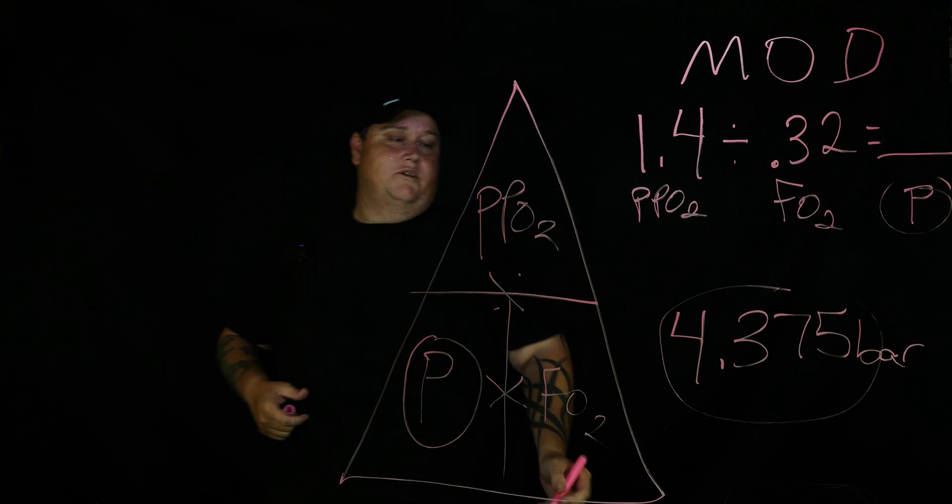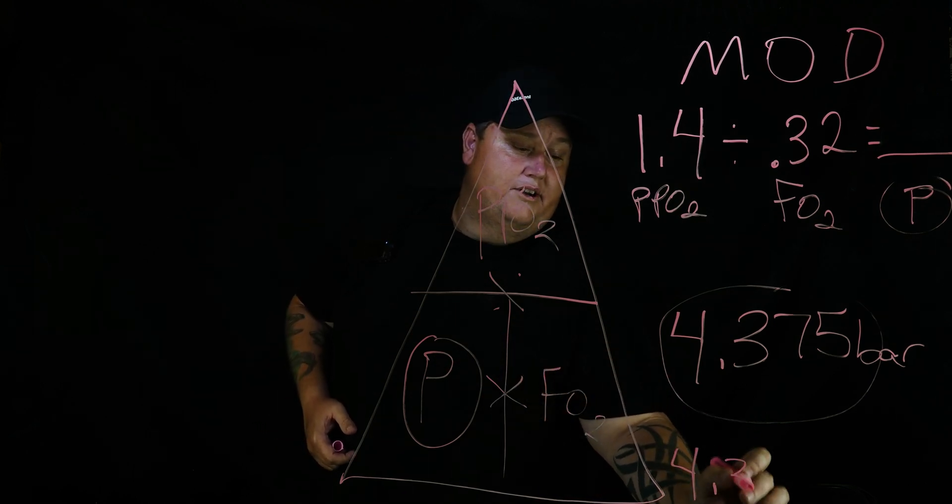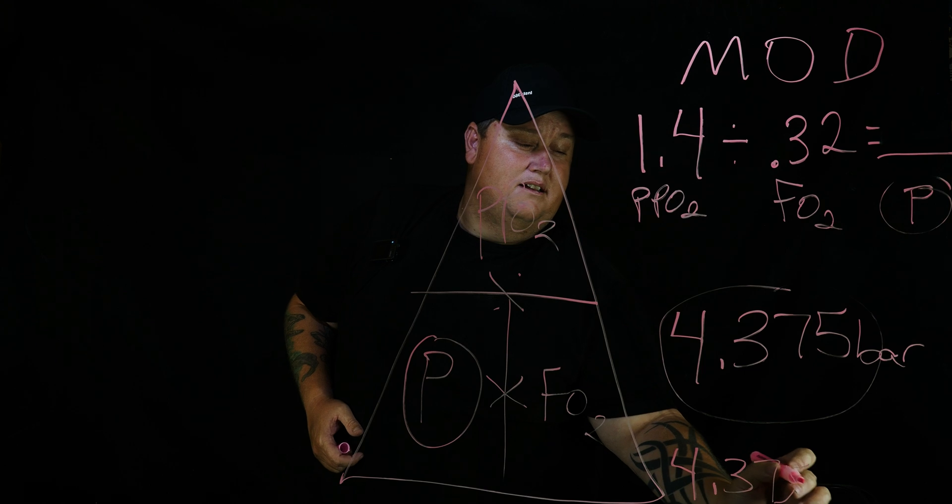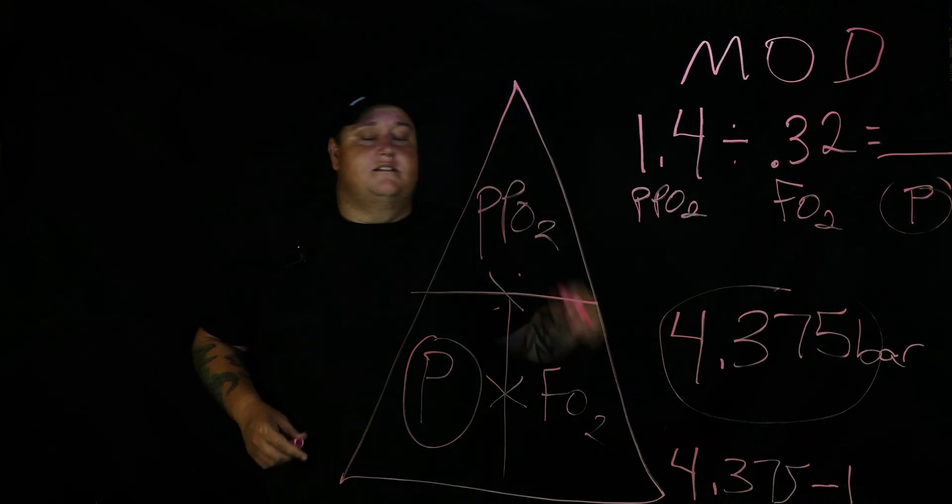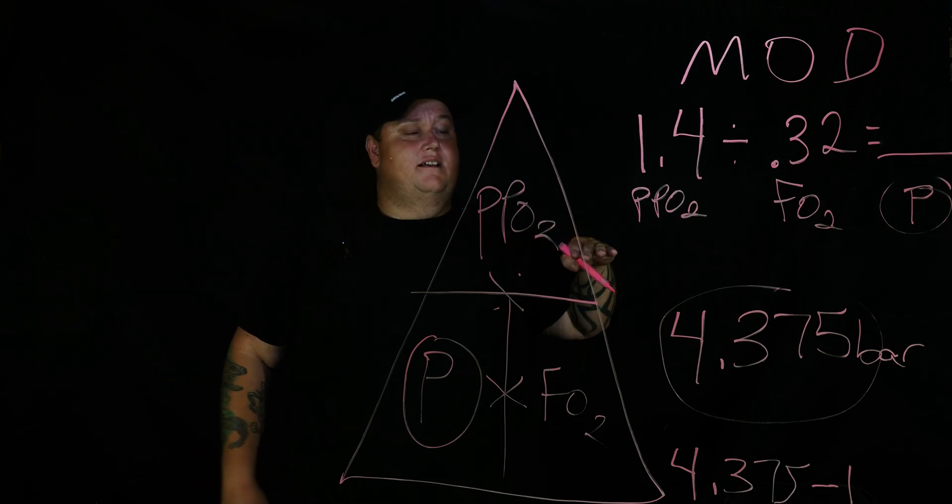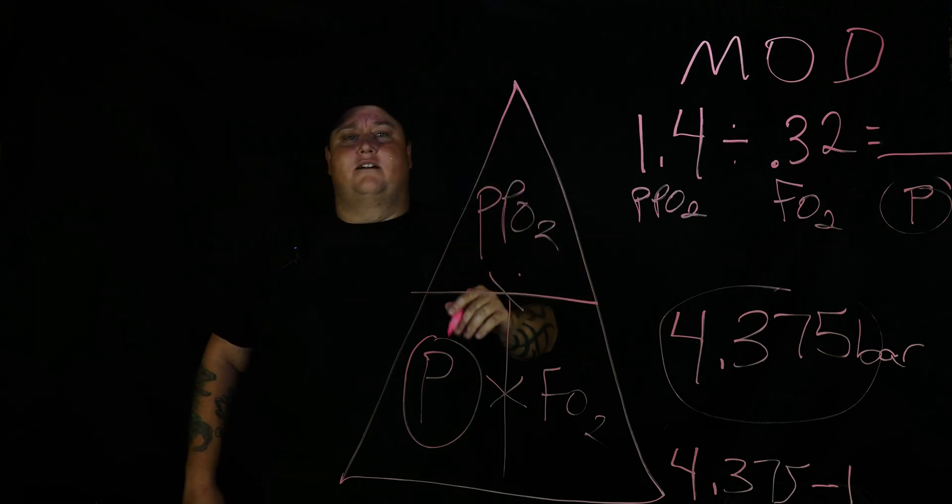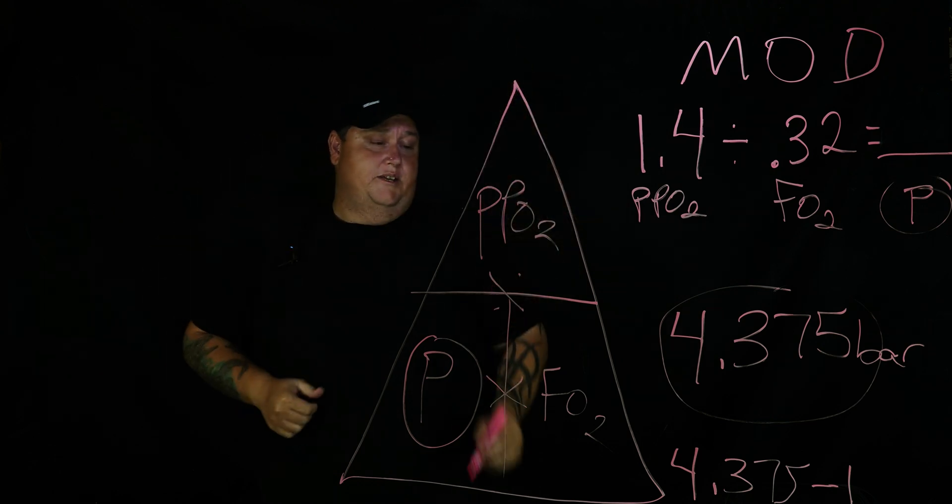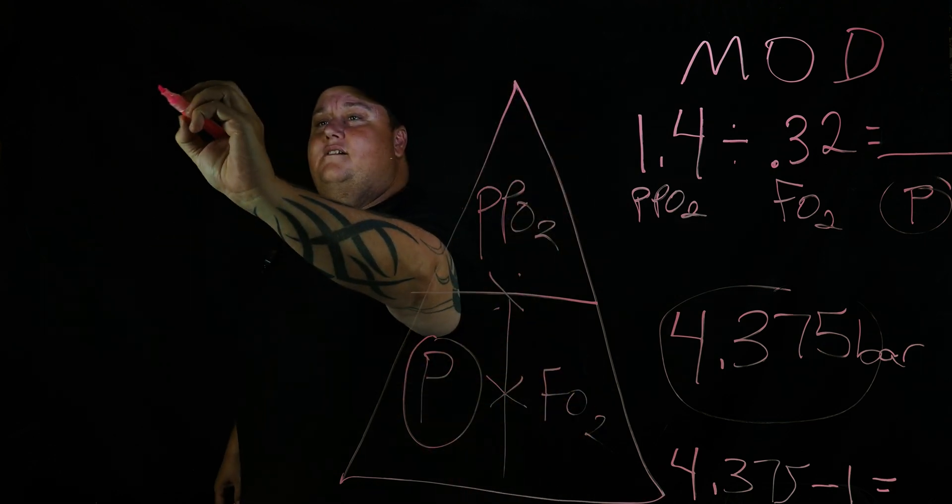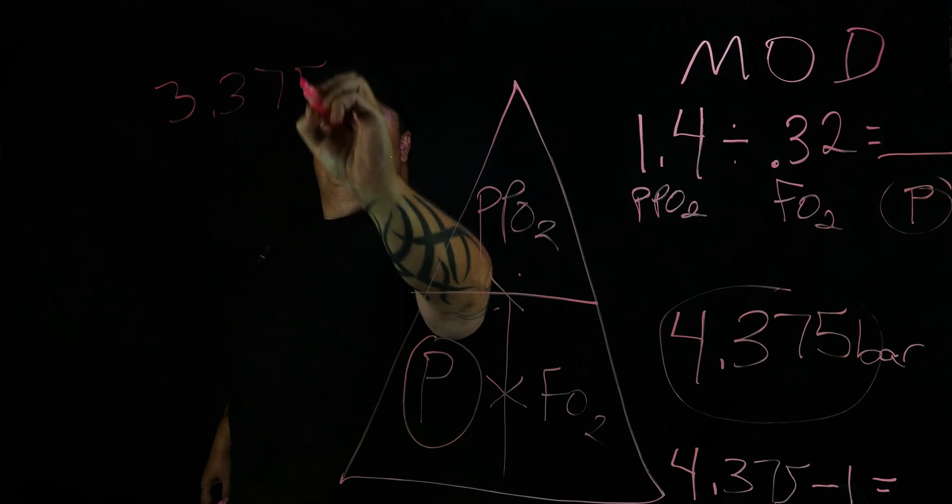So all we have to do is convert this to meters. So what I'm going to do is 4.375—that's a five—I'm going to minus one because of the surface. That's the surface pressure. Like we said, there's one bar of pressure here on the surface, I don't want to count that. I just want to know the pressure of all the weight of the water above me. That obviously gives us 3.375 atmospheres.